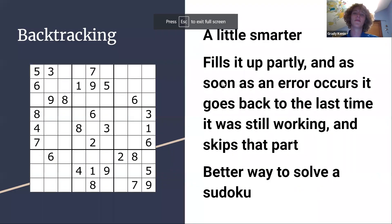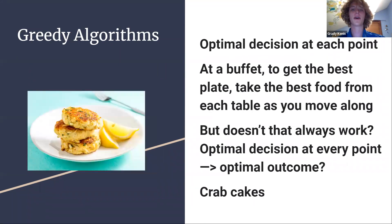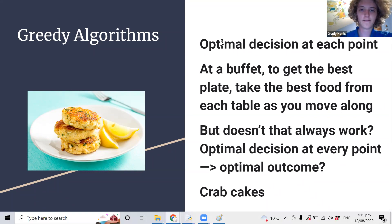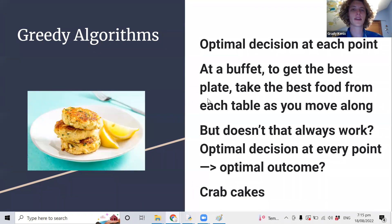You can get a lot smarter — algorithms aren't just about putting in different inputs and checking if it's right. Let's look at something even more intelligent, though still not super optimal. This is a paradigm we've actually run into before in the last session. Who can remember when we might have encountered a greedy algorithm last session?